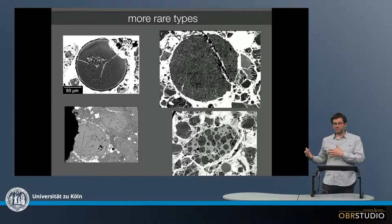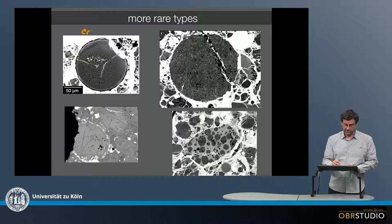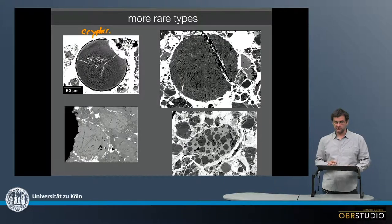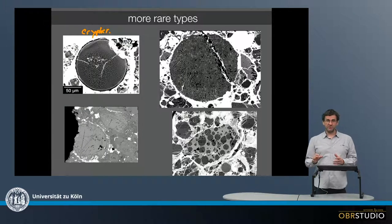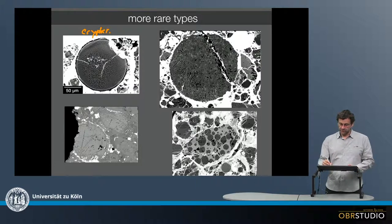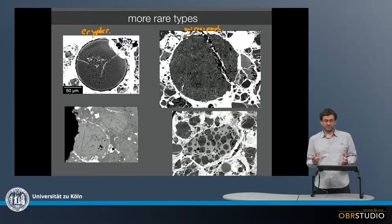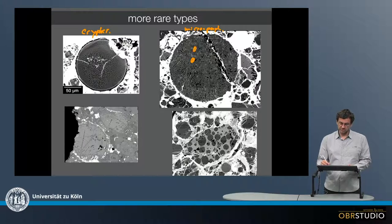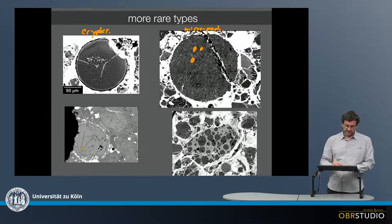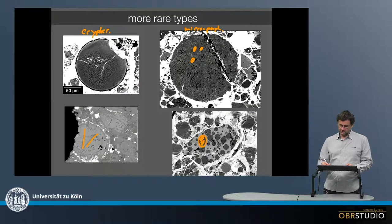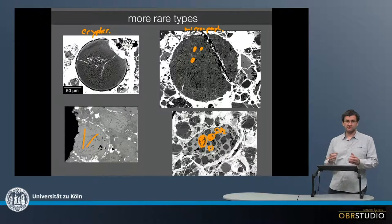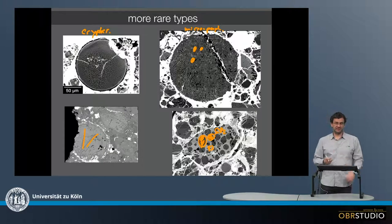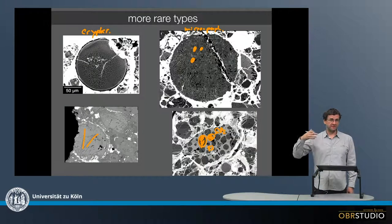Then there are a couple of more rare types, like cryptocrystalline chondrules — these might have some structure or no structure at all, so they look just homogeneous like glass. Or there are microporphyritic chondrules, which are basically a subtype of porphyritic chondrules with just smaller porphyritic grains. There are also some exsolution structures, and very unusual material where the content is all SiO₂ — maybe cristobalite — in between pyroxene, indicating an exsolution of silica and pyroxene. As noted, these are more rare types and there is a whole zoo of them.